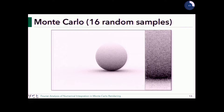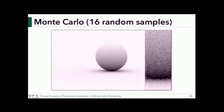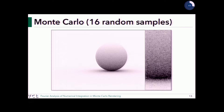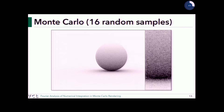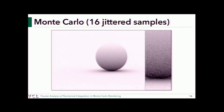Here we have a sphere and we're doing light transport estimation: some emitter is emitting photons and we're counting how many arrive at each virtual pixel. Using 16 random samples at each point to integrate, you can see the graininess — the high variance. Without increasing the number of samples, just by changing to stratified sampling, it looks smoother. The zoomed-in version makes the noise difference clearer.